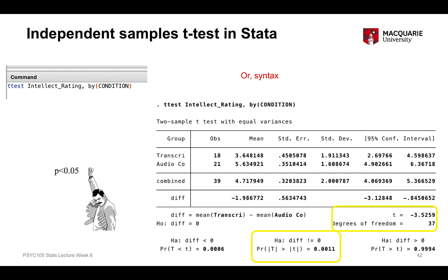The likelihood of obtaining this particular difference between the scores, with this amount of variability around it, if there were truly no difference in the population, is very small. Therefore we conclude there probably is a real difference between the audio condition and the transcript condition in the population. There appears to be a real positive effect of communicating information in an audio or verbal way compared to written information, with higher intellect scores in the audio condition than the transcript condition.